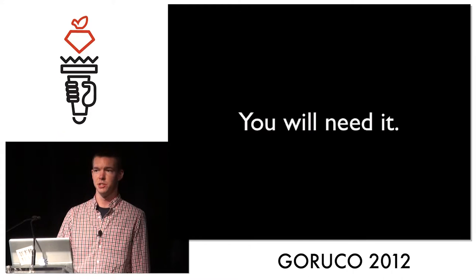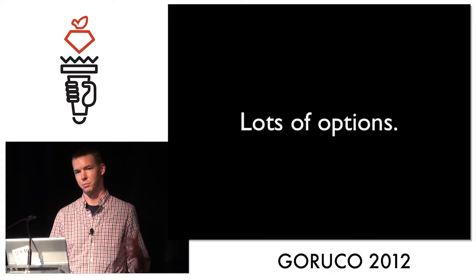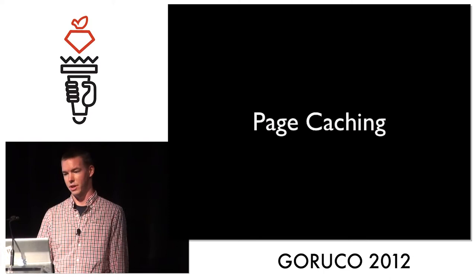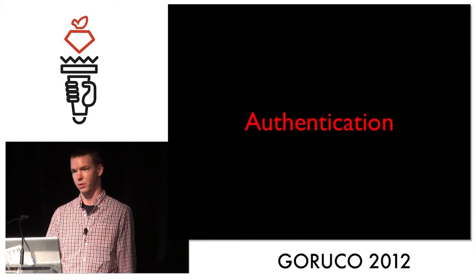So we'll need it, right? Any decent sized Rails application is going to need it, and any decent sized web application is probably going to need it. You have a lot of options, so let's dig through them from the top down. We'll start with page caching. Page caching really isn't a very good option for most sites because they have private data, and authentication isn't really possible with it. So we're going to ignore page caching.